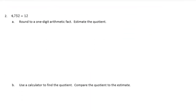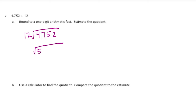Number 2: 4,752 divided by 12. We're going to do the same thing — get it down to a one-digit fact and estimate. Starting with 4,752 divided by 12, I'm going to round 4,752 to 5,000 and round 12 to 10.